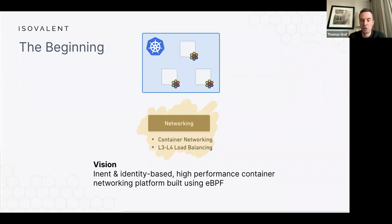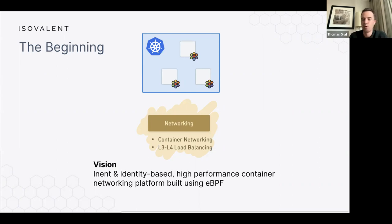That was the founding team all the way back in 2016 when we wrote the first lines of Cilium code. The original vision was very basic. Kubernetes was already on the rise, but back then there was also Docker, so we had both Docker and Kubernetes support, treating them equally. In this initial phase, we focused exclusively on networking, container networking, and Layer 3/Layer 4 load balancing. We had a very clear vision: we want to be intent and identity-based, high-performance, scalable, and focused on container networking. Around 2016, the industry was moving from OpenStack and virtualization toward containers, and it became clear that existing solutions would not scale to the demands of containers.